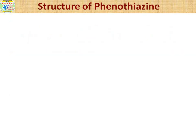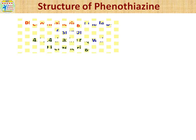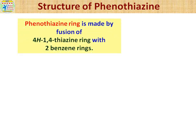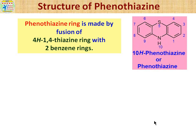Let's talk about the structure of phenothiazine. Dear friends, the phenothiazine ring is made up of three rings — it is a tricyclic ring system. You can see it on the screen. It is called 10H-phenothiazine, or simply phenothiazine.